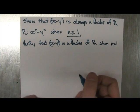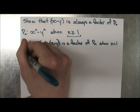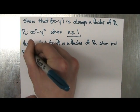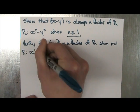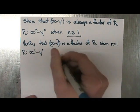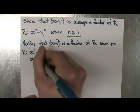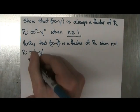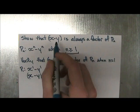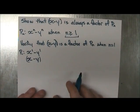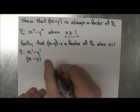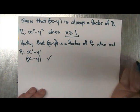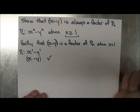So we're going to prove that this is true. So P_1 is x to the 1 minus y to the 1, and we just get x minus y. And it's pretty clear to see that x minus y is a factor of x minus y. So this is true. We can move on to our second step.